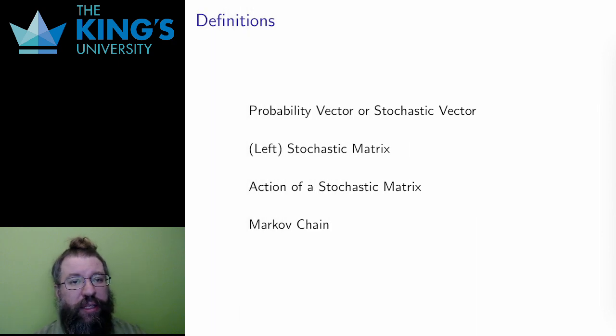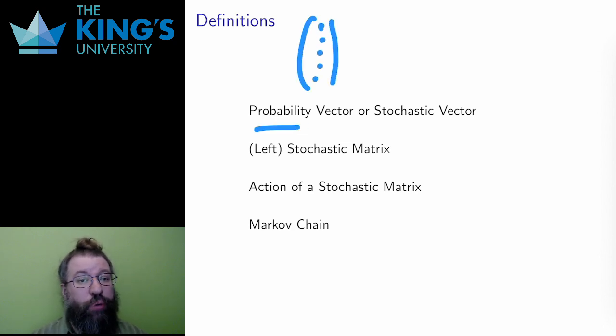From that example, now let me give you the general setup and formal definitions. A vector of all positive entries where the entries add up to 1 is a probability vector or a stochastic vector. It's a vector that represents probability. And a matrix where all the columns add up to 1 is called a stochastic matrix, and in some situations, just a left stochastic matrix.